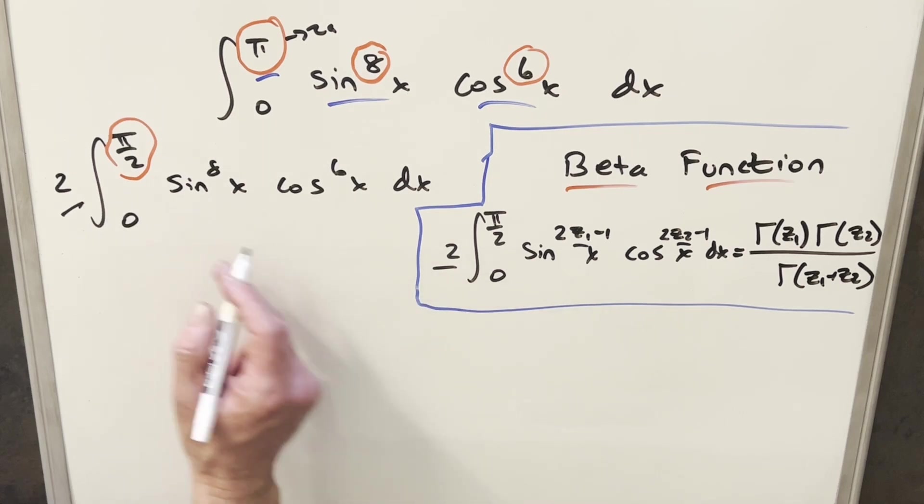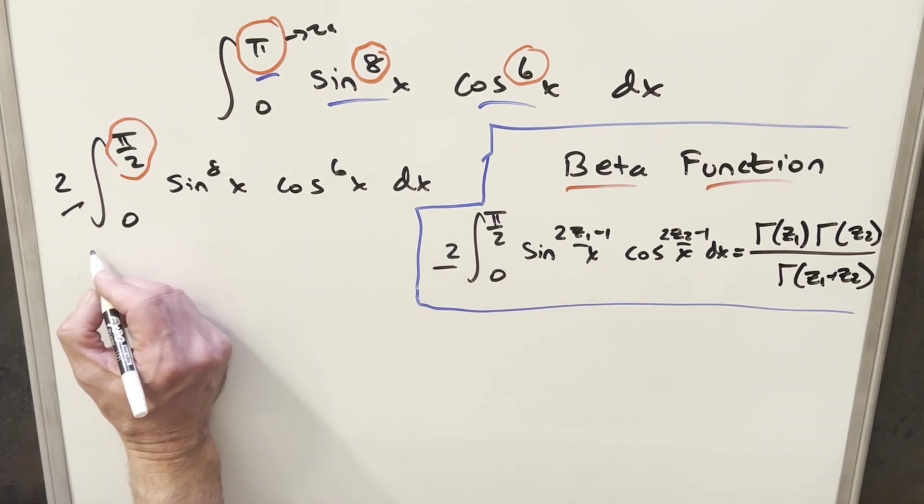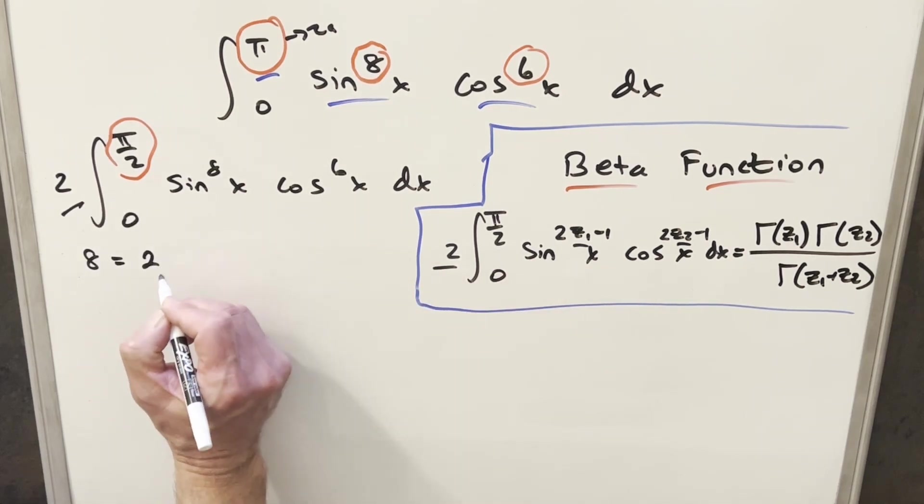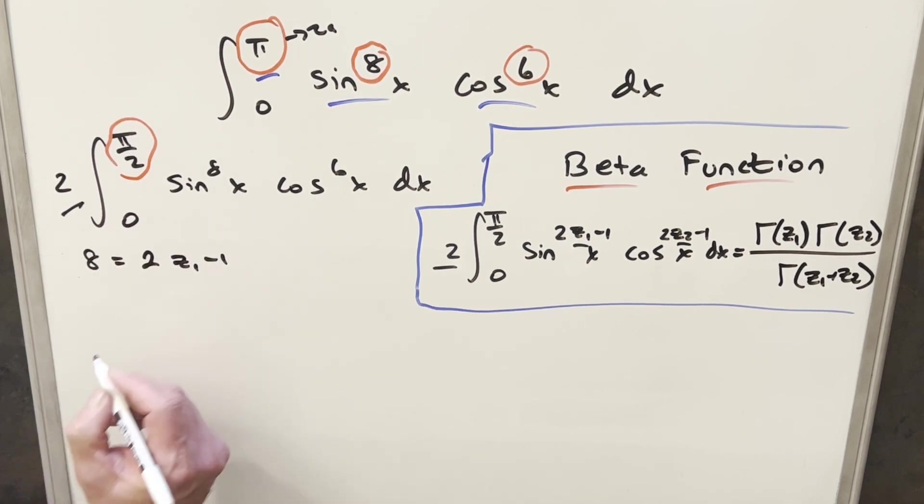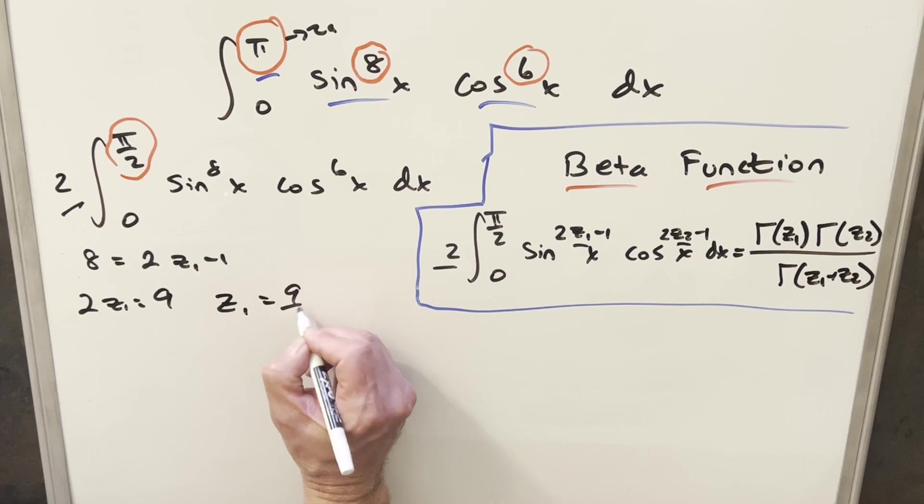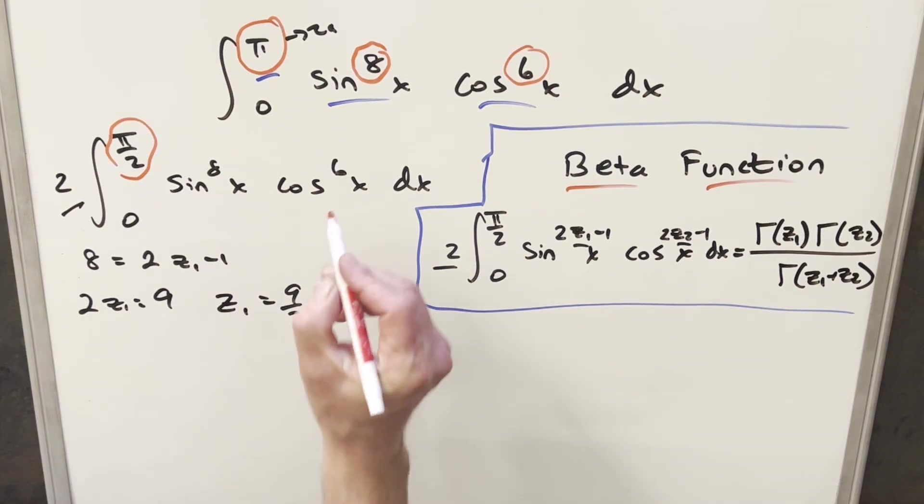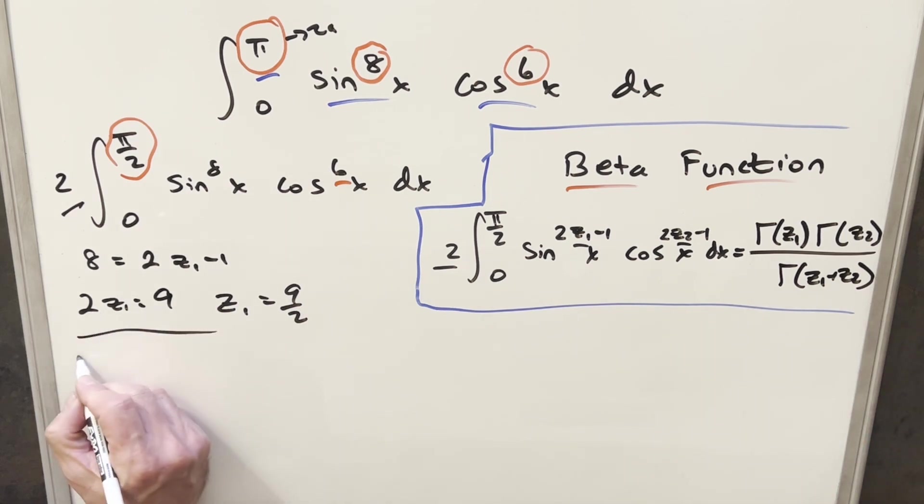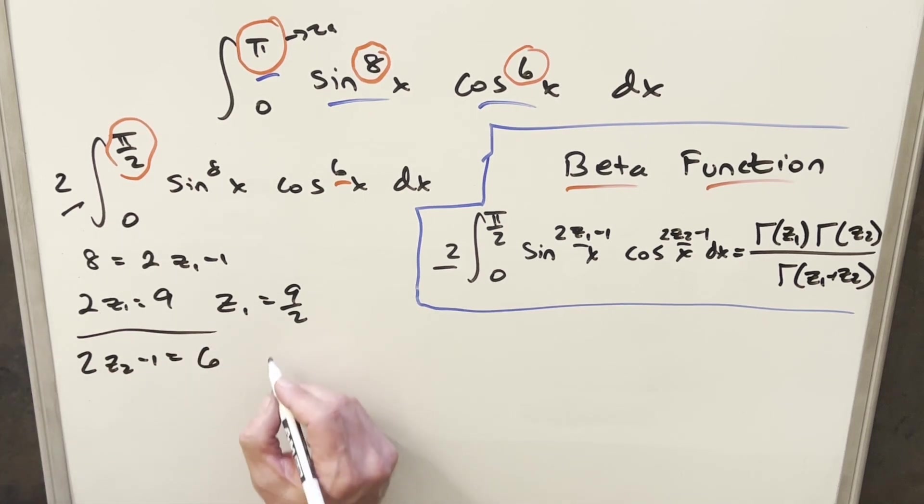So first, on the exponent for the sine, we're saying this exponent is 8, and it's going to be equal to 2 z1 minus 1. Just solving for z1, this is going to be 2 z1 equal to 9, then we divide by 2, and we find z1 equals 9 over 2. And then for this exponent on the 6, we just need to find our z2 value. So we have 2 z2 minus 1 equals 6. Solving for z2, we just get z2 is going to be equal to 7 halves.